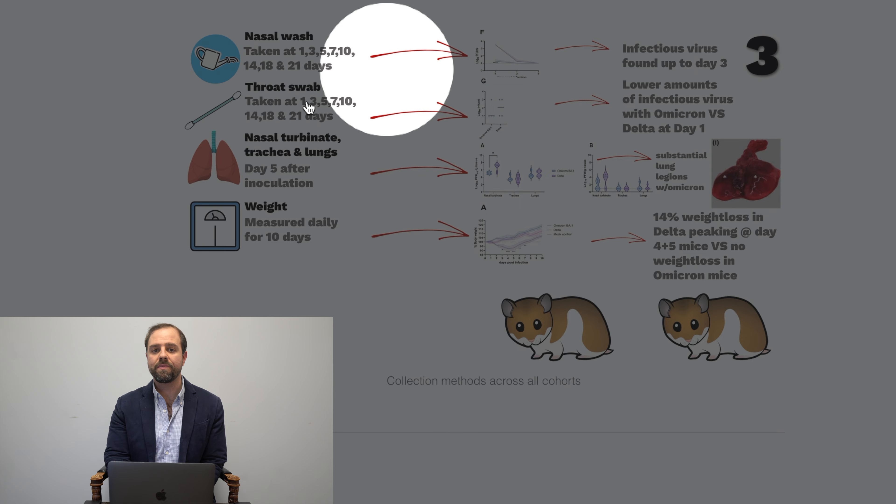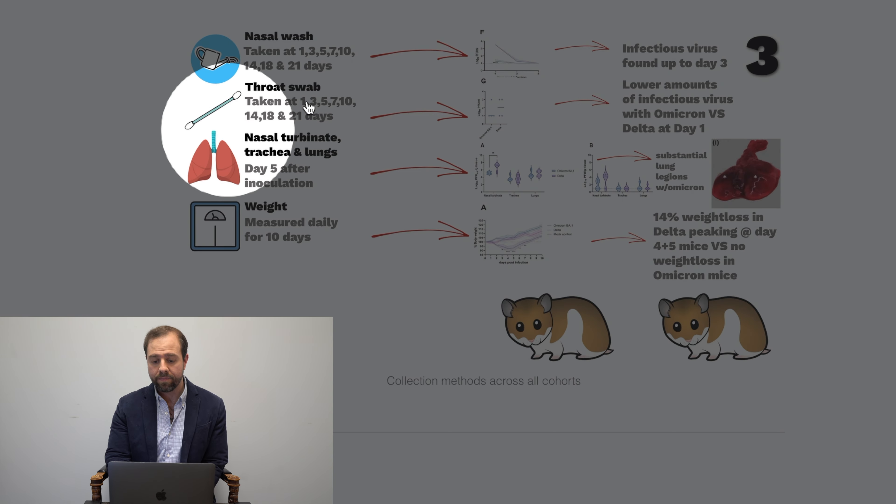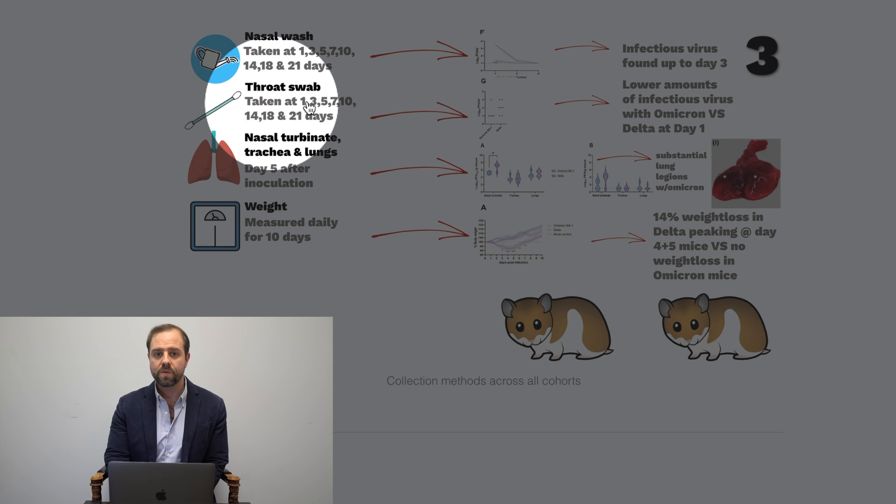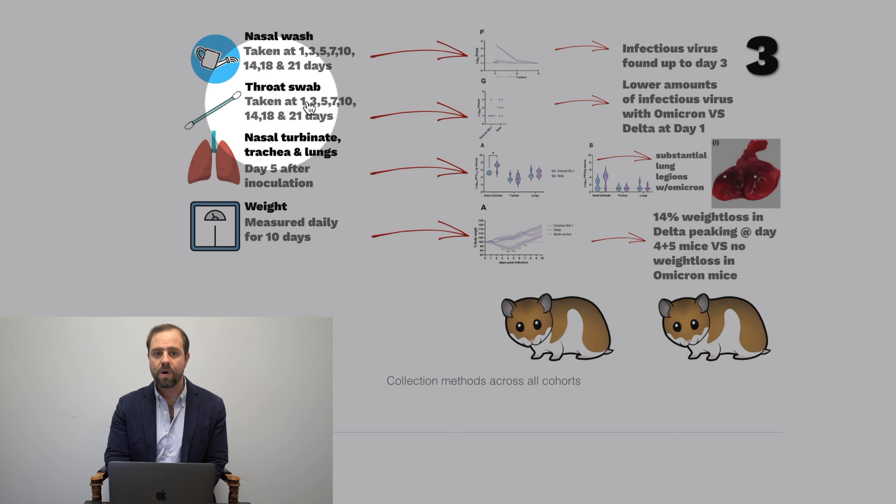Now, let me scroll to slide three. This slide explains collection methods. For example, nasal wash samples of infectious virus were found up to three days after inoculation. Okay, so let's move to the next column, throat swabs. Data from throat swabs revealed lower amounts of infectious virus with Omicron versus Delta by day one. And by the way, samples were taken every odd day for 21 days for both nasal wash and throat swabs. Now, let's look down at the nasal turbinate column. The graph here shows most viral RNA was found mainly in nasal turbinates or the nose area. Essentially, nothing was found in the trachea. Also, if you continue to the far right, it shows the lung damage that we already talked about.